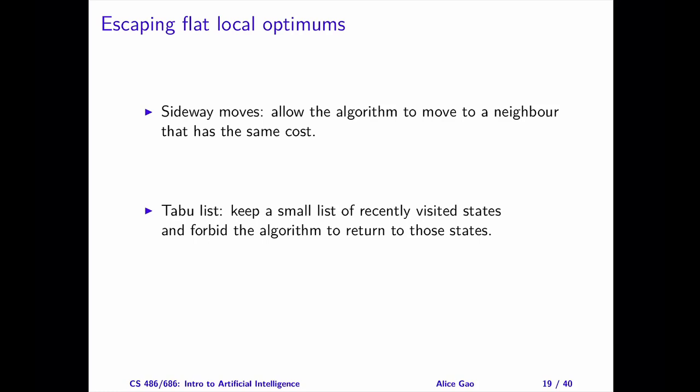The algorithm is allowed to move to a neighbor with the same cost as the current state. One problem with allowing Sideway Moves is that the algorithm might not terminate. Imagine that we are exploring a flat area. Since the algorithm does not remember where it has been, it could be moving in the flat area in circles forever. So, if we allow Sideway Moves, we need to put a limit on it. Typically, we will specify that the algorithm terminates after making a maximum number of consecutive Sideway Moves.